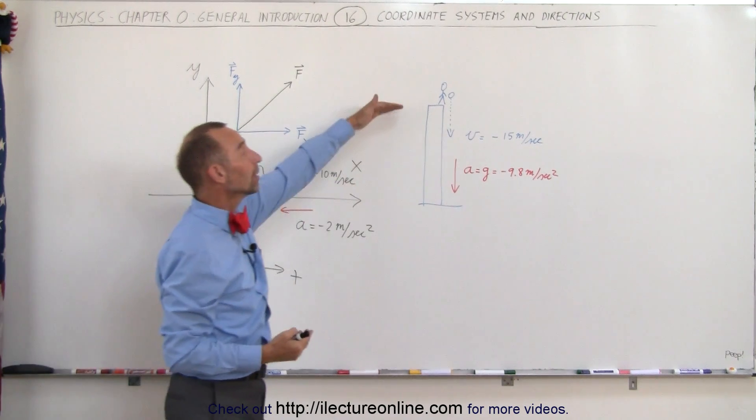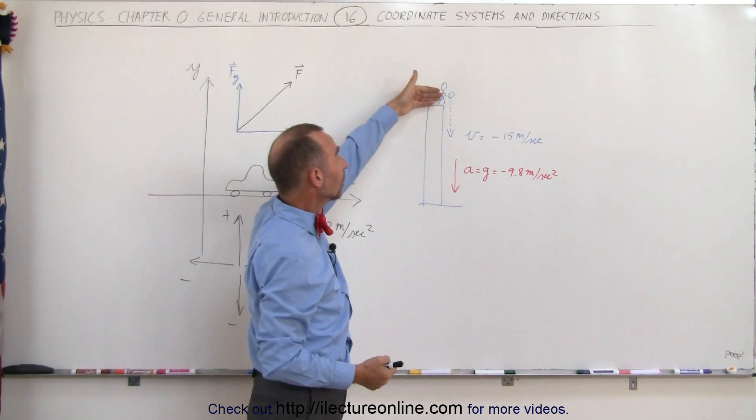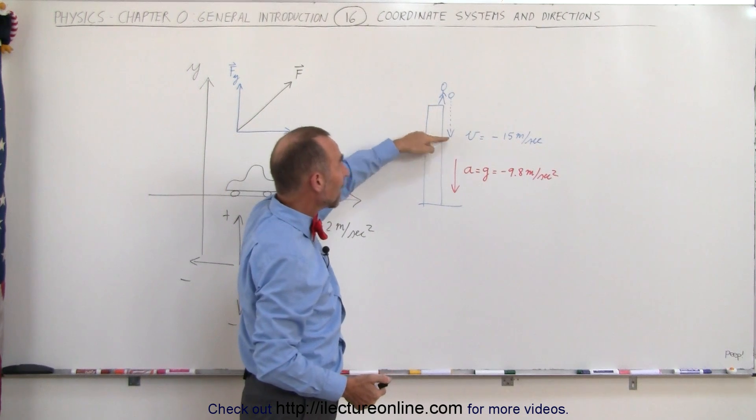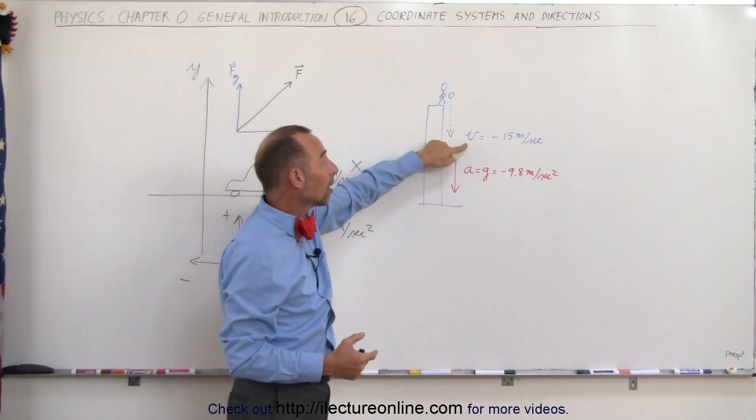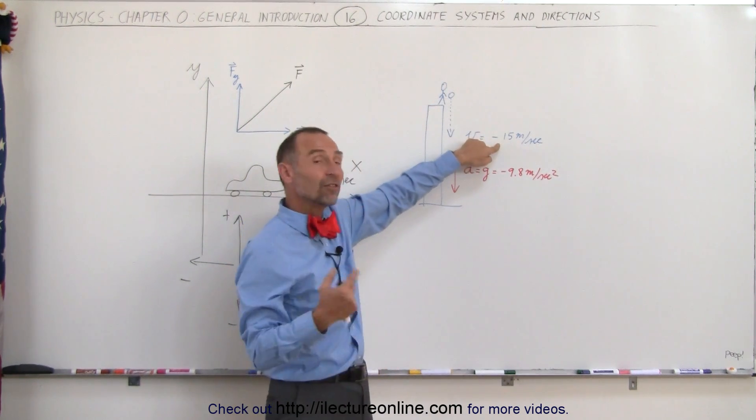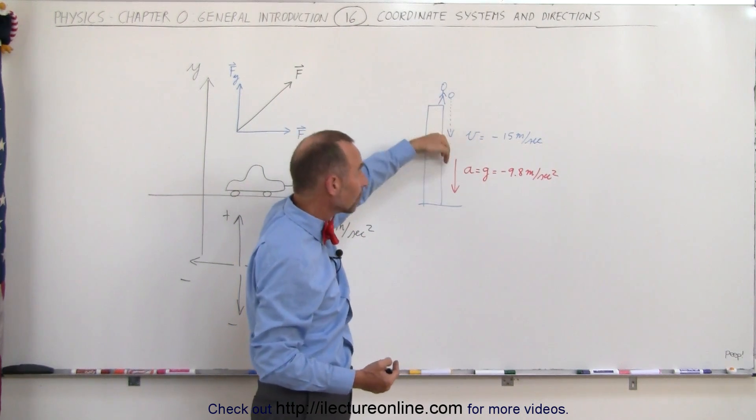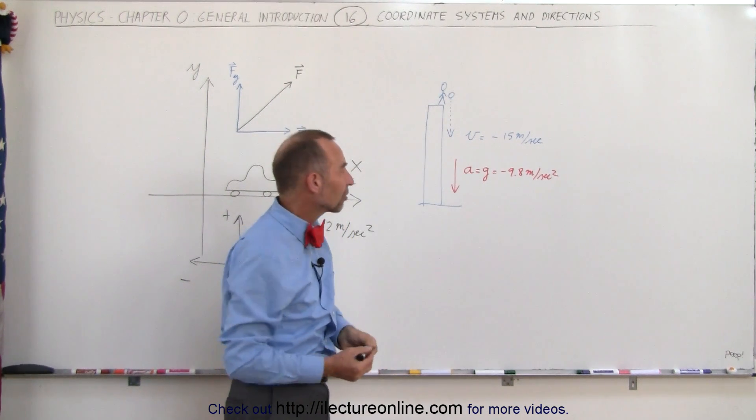When we drop things off a building, for example a ball, and after a certain amount of time we calculate the velocity of the ball, and we say the velocity is minus 15 meters per second because the direction of the velocity is downward, we consider that a negative direction.